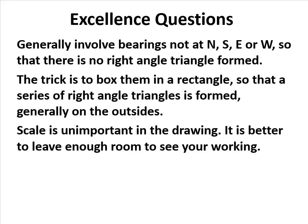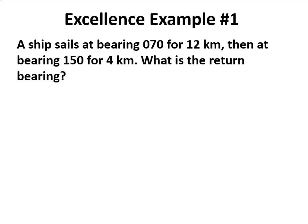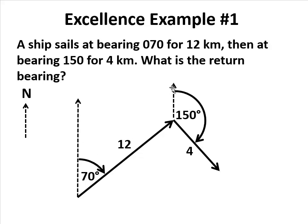The best way to explain it is to draw it and show you what I mean. So here's an excellence question. It sails at one bearing followed by another bearing. Let's sketch it. The first 12 kilometers are to the top right because it's 70 degrees from north. Then north always being parallel, that's 150, so it swings round, and we are asked to find the return bearing which will be along the red leg, this arc here.